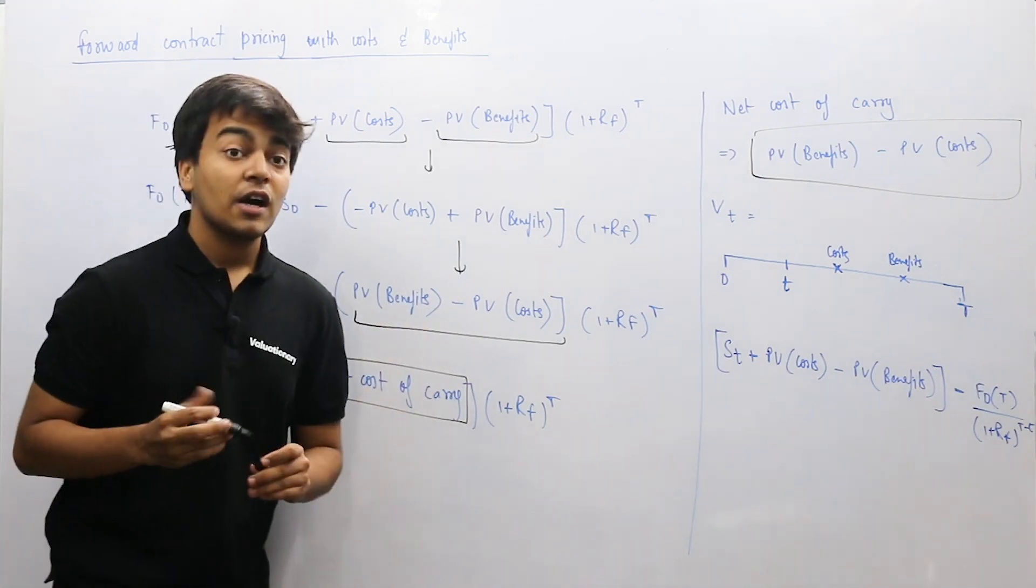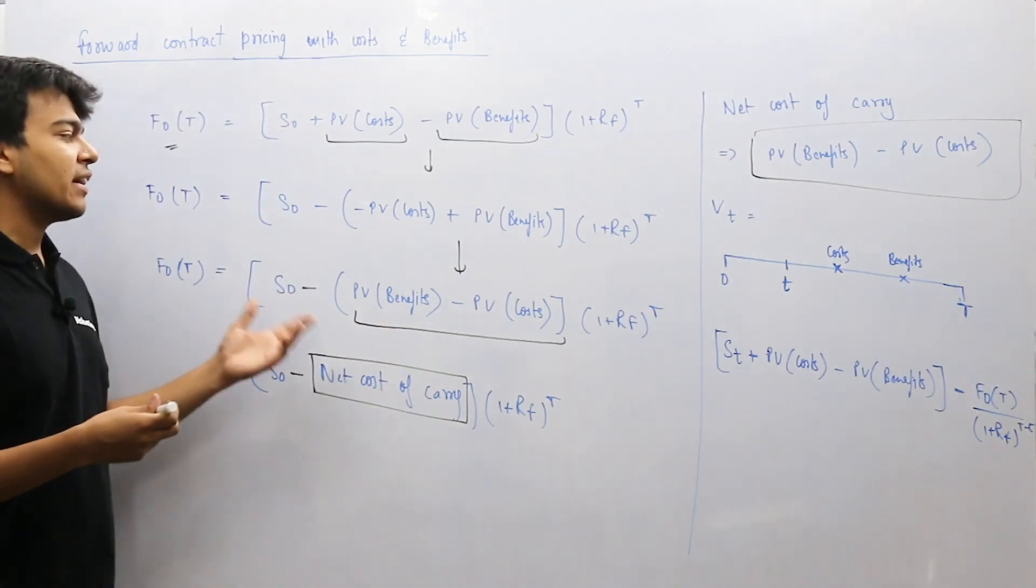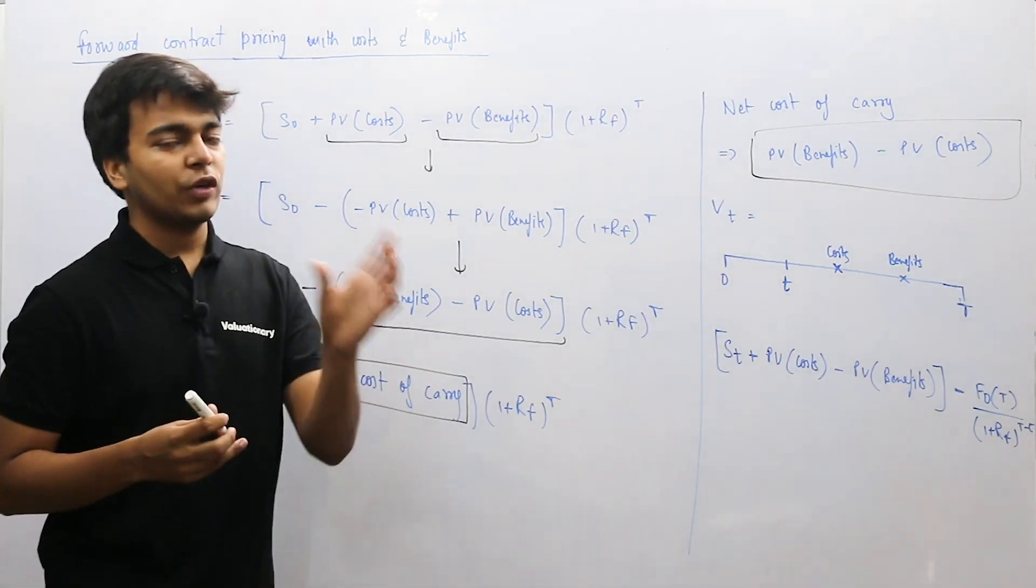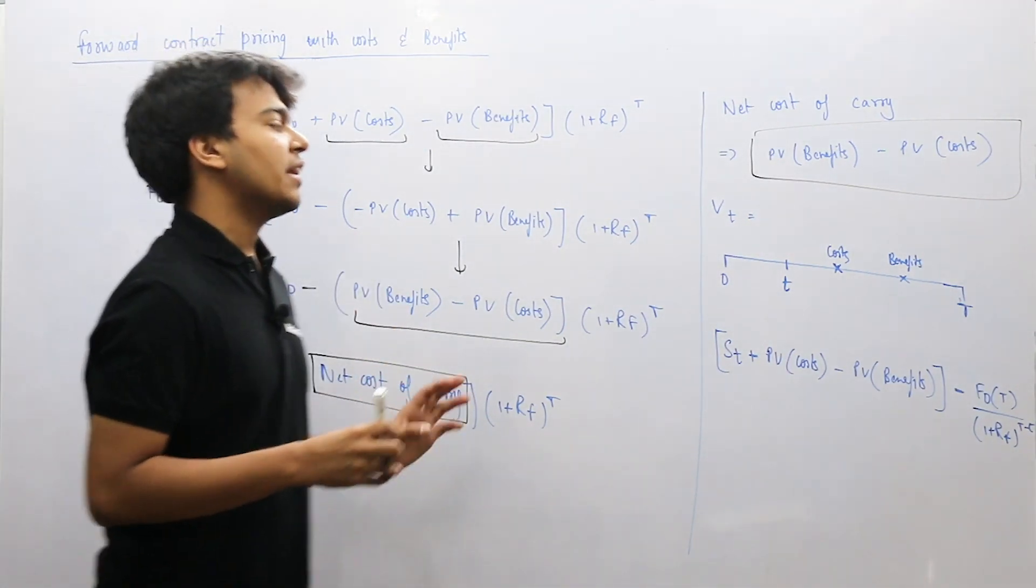So, when you have forward price and when we have cost and benefits involved, what you can simply do is use the spot price, subtract the net cost of carry, and take it to the time period T by using the risk-free rate. Net cost of carry, how do you remove? Benefits present value minus present value of cost. That is how you figure out your price of the forward contract, again when you have cost and benefits involved. But yes, you can give one name of benefits and cost, that is net cost of carry.